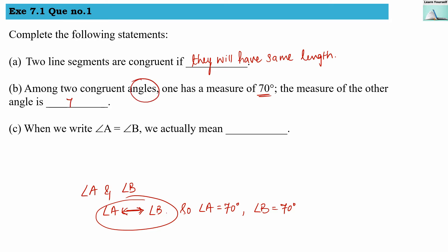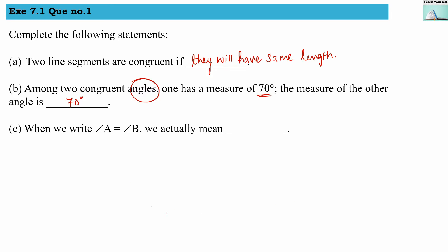So here we are talking about angles, so their measures will be the same — the other angle is also 70 degrees. When we write angle A equals angle B, we actually mean the measure of angle A equals the measure of angle B. So we can write: measure of angle A = measure of angle B.